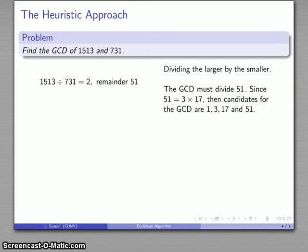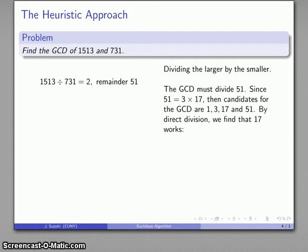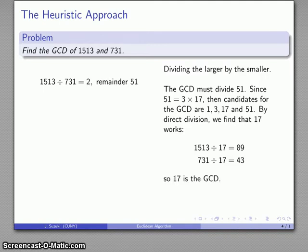This gives us a listing of candidates for the greatest common divisor: namely 1, which is always a possibility, 3, 17, and any products of the primes we have, which in this case is just 51. At this point, we can do a direct division and find that 17 actually works as a divisor of both numbers. And because no larger number — 51 in this case — divides them, we know that 17 is going to be the greatest common divisor.